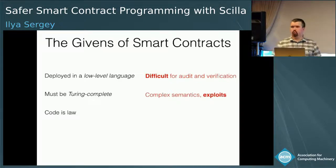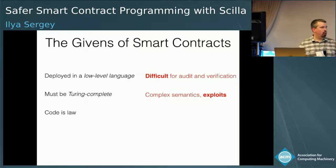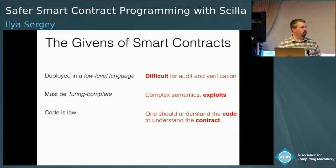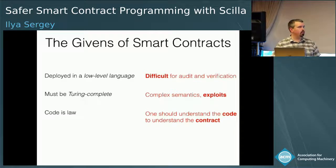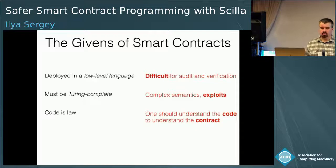With these givens come certain pitfalls. If the base language in which smart contracts are deployed is a low-level one, it makes it very difficult to audit and verify those contracts. Turing completeness is also a double-edged sword — even though it gives a lot of expressivity, it also requires complex semantics, resource accounting, and ultimately leads to multiple exploits. If we consider code as law, we cannot get away without really understanding the code, and if the code is written in a low-level language, that becomes very difficult.